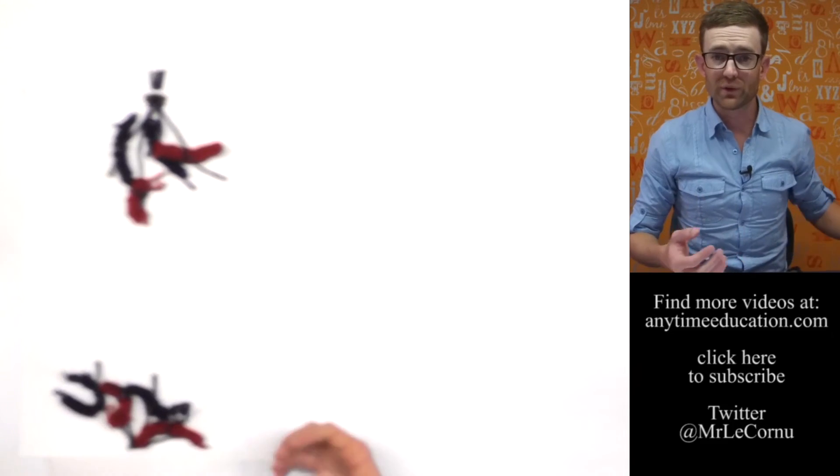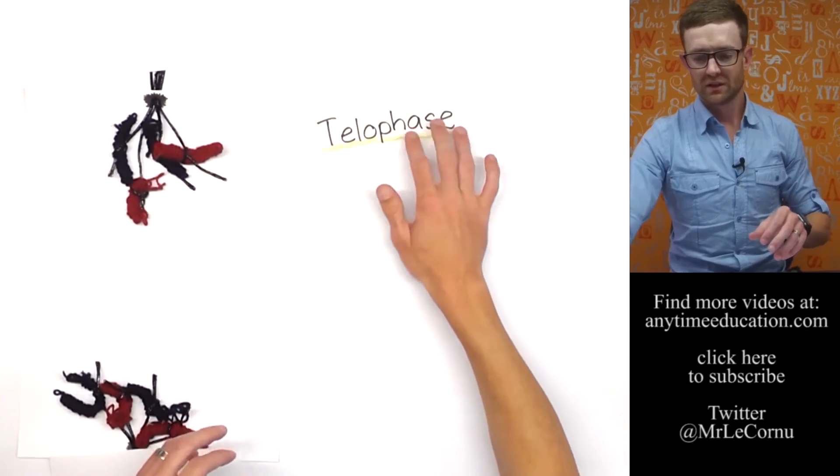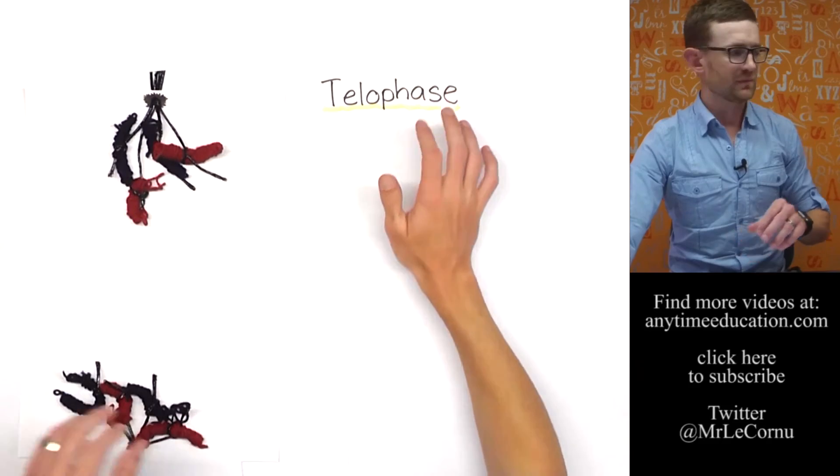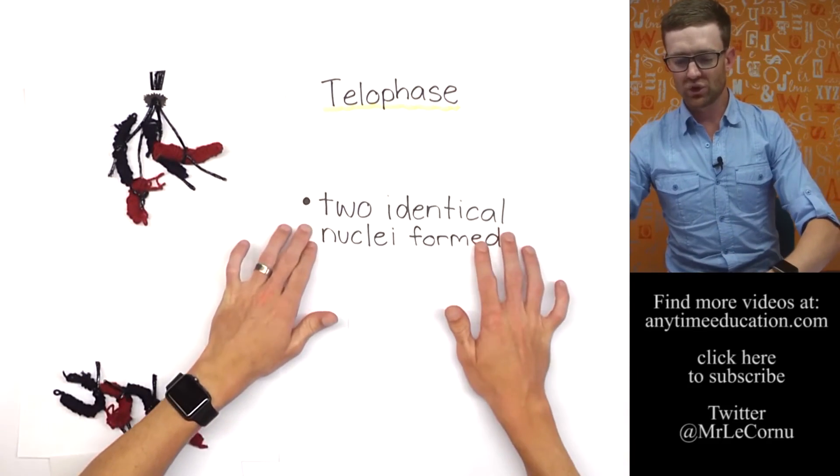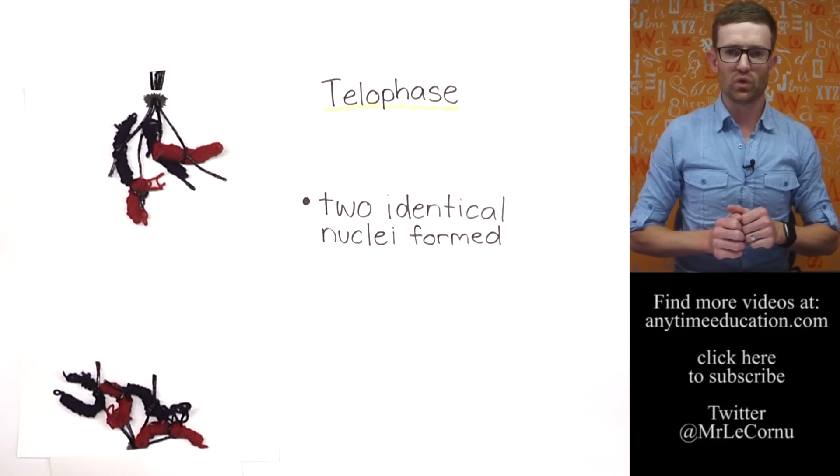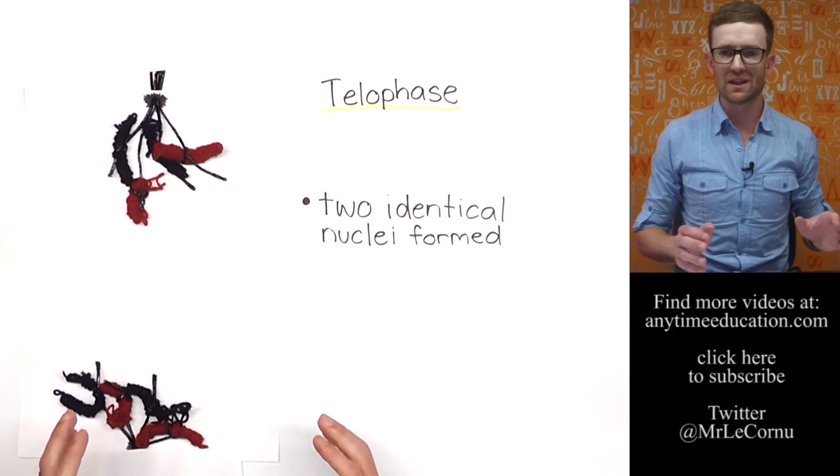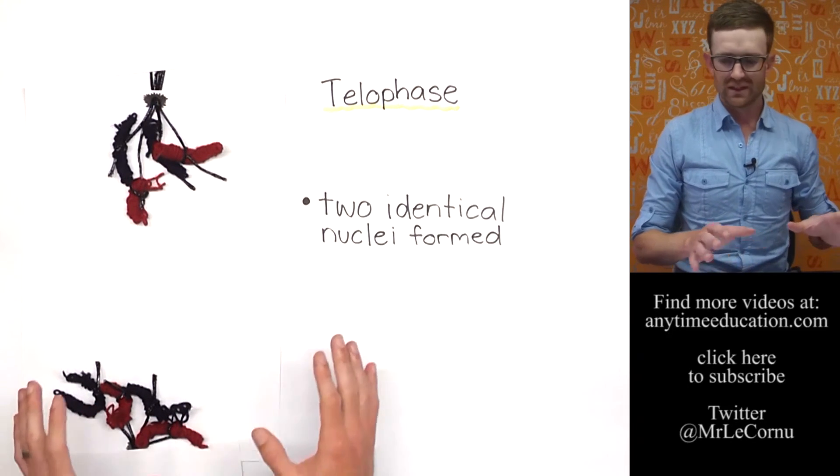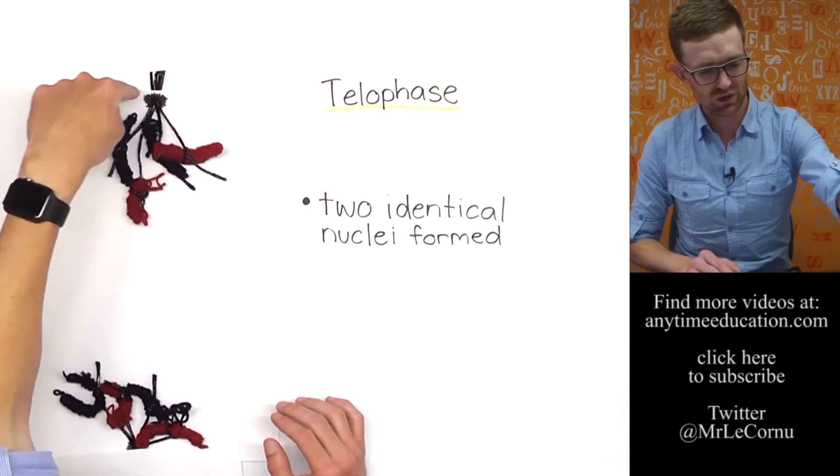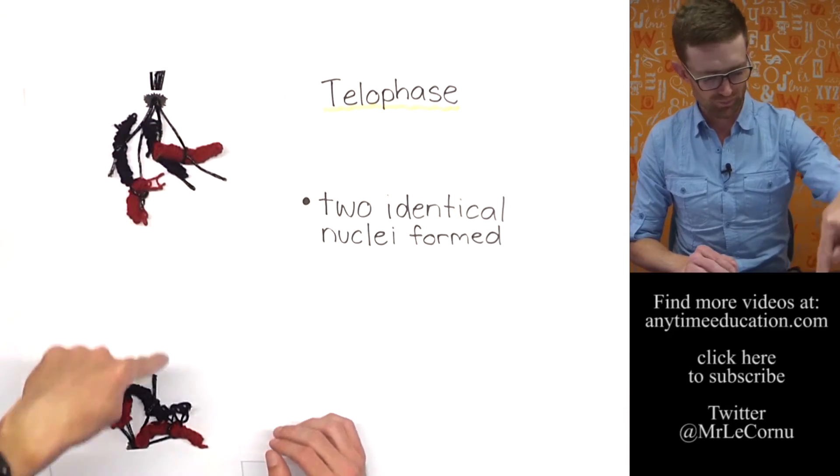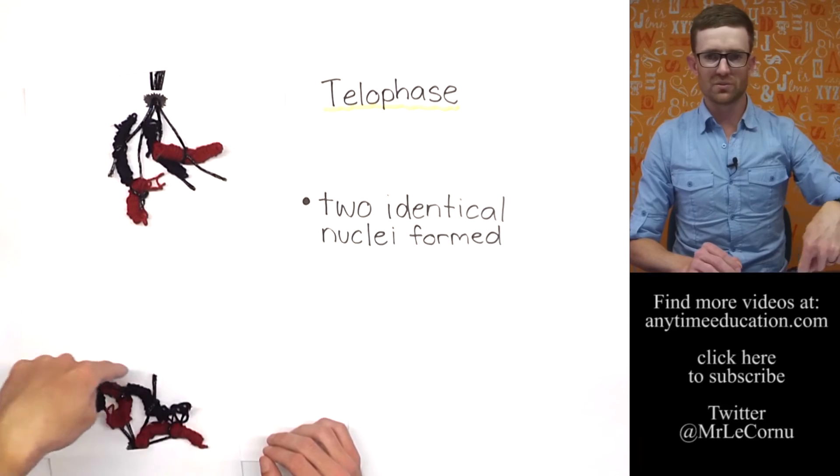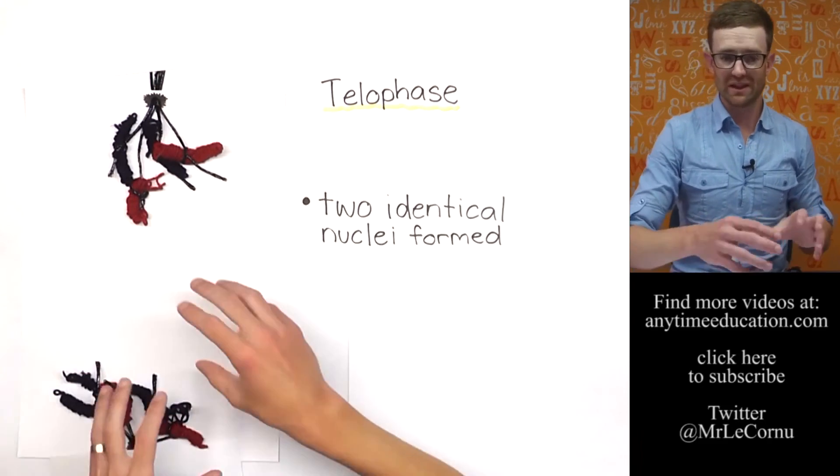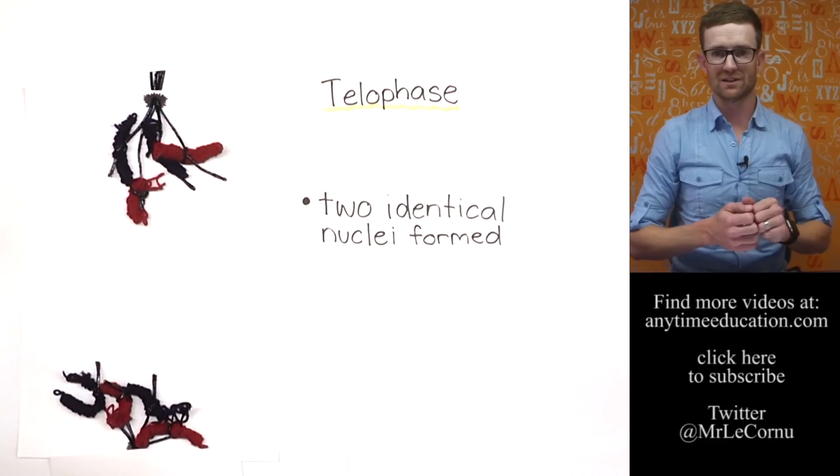The fourth and final phase of mitosis is called telophase. And what happens in telophase is two identical nuclei are formed. So in prophase, the nuclear membrane disappeared. Now that we're up to telophase, nuclear membranes are going to form around these chromosomes again. So the cell will actually have two nuclei inside of it.